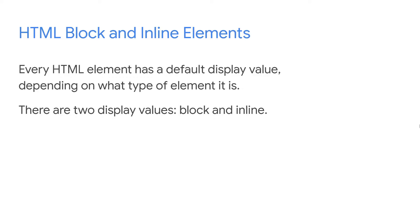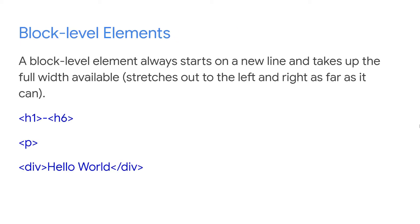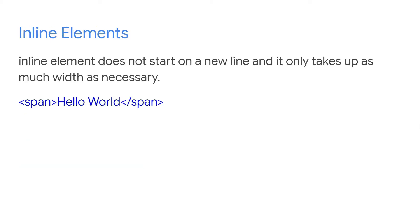There are two types of default display values: block and inline. A block-level element always starts on a new line and takes up the full width. When you add the next element it will move to the new line. Examples include h1, p tag, and div tag — whenever you add a p tag, the next element will always start on a new line.